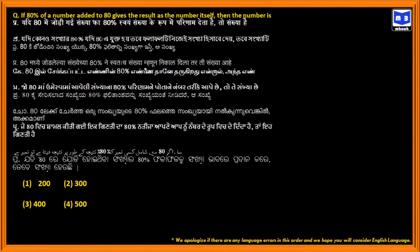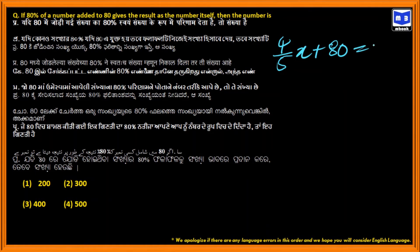If 80% of a number added to 80 gives the result as the number itself, then find the number. We can write 80% as 4 by 5. Let the number be x. So 4 by 5 of x, added to 80, gives the result as the number itself — that is, x.